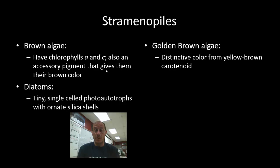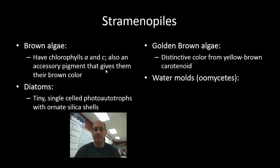Golden brown algae is a group of organisms that are actually unicellular and flagellated. While the name is similar to that of brown algae, they are somewhat different. The name golden brown algae refers to their color, which they derive from a yellow-brown carotenoid pigment found in some of their chromoplasts.